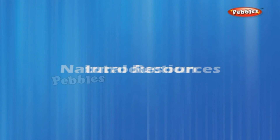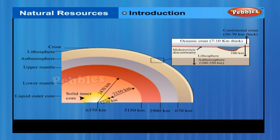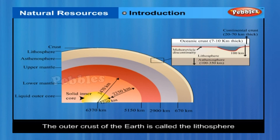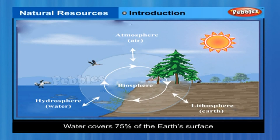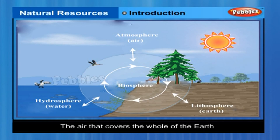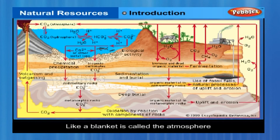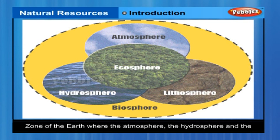Natural Resources. The outer crust of the earth is called the lithosphere. Water covers 75% of the earth's surface and is also found underground; these comprise the hydrosphere. The air that covers the whole of the earth like a blanket is called the atmosphere. Living things are found where these three exist. The life-supporting zone of the earth where the atmosphere, the hydrosphere and the lithosphere interact and make life possible is known as the biosphere.